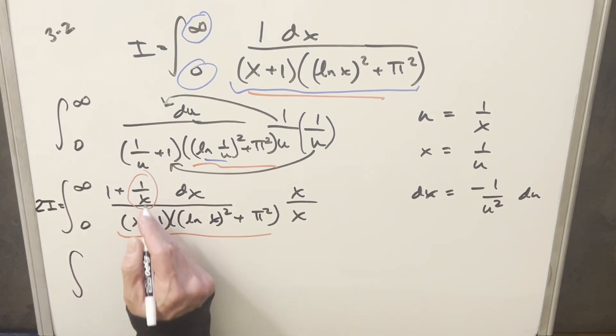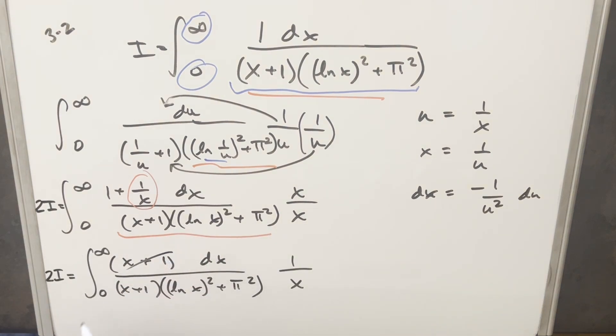When we do that and we rewrite, this is going to transform in the numerator to just x plus 1 dx. And then we'll have this exact same denominator. And from here, we can just cancel out the x plus 1. So that's some good simplification right there.